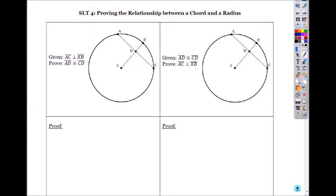Let's prove the relationship between chord and the radius. So here is what's given. Segment AC is perpendicular to XB. Do you see? That's given.